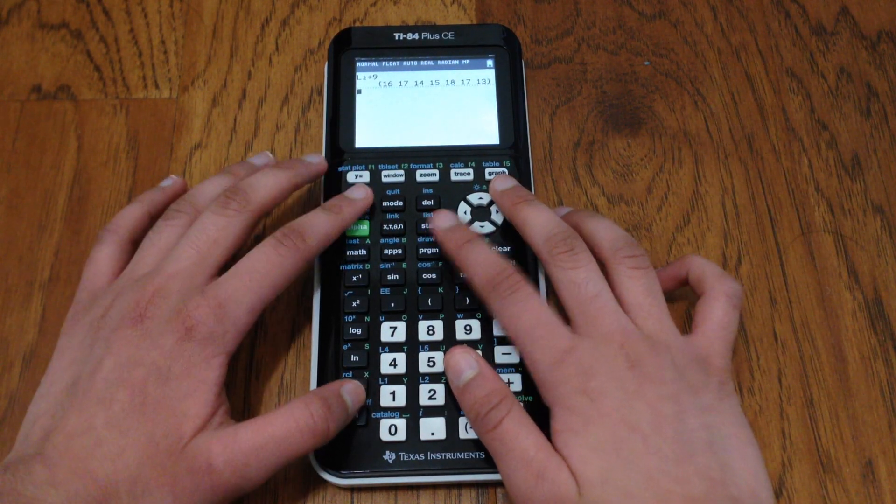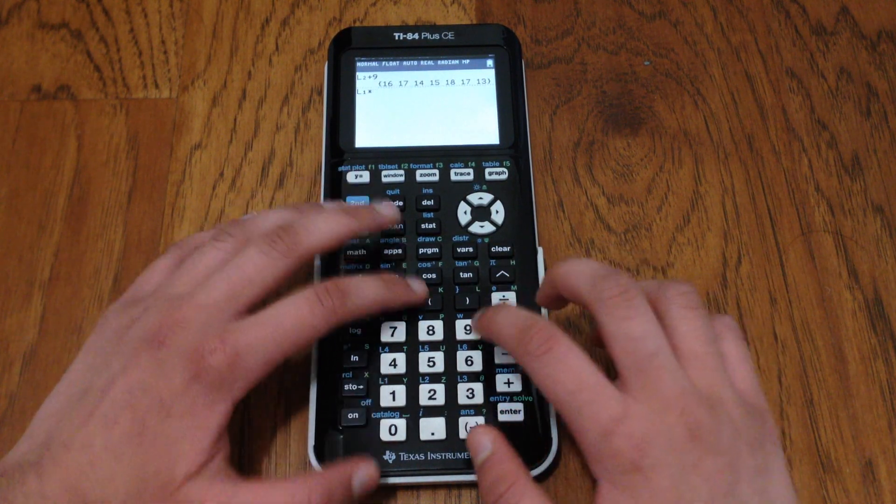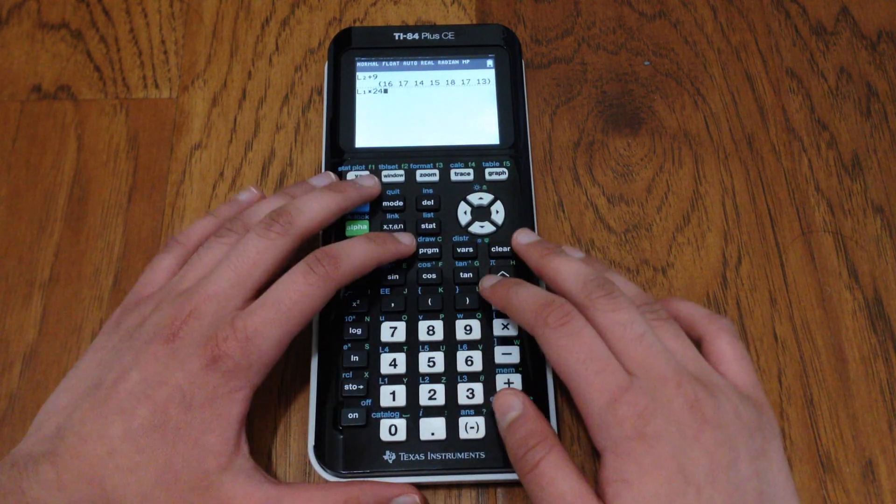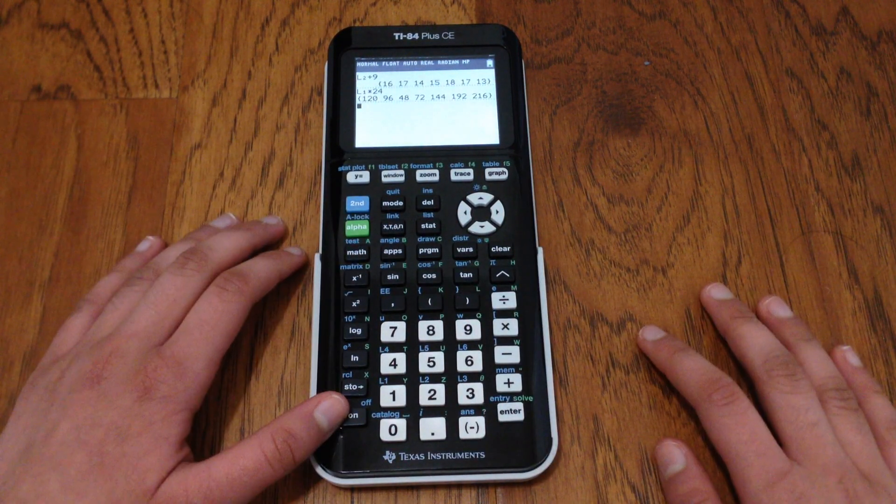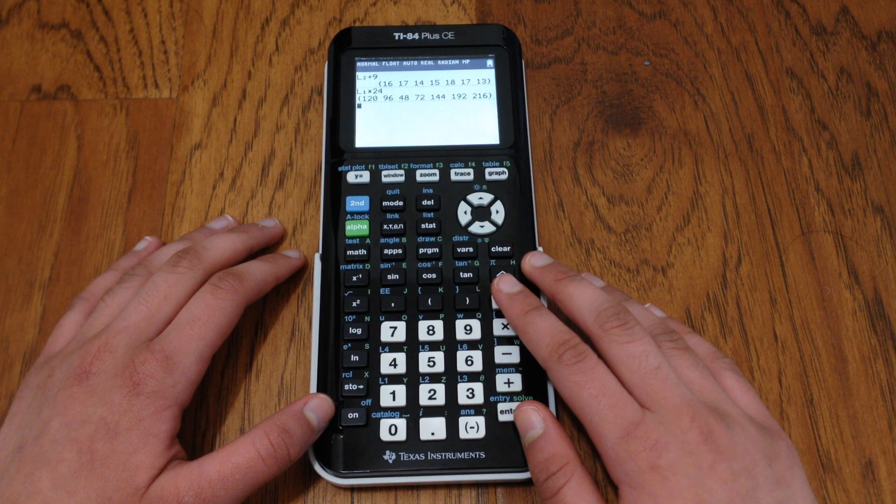Next, let's say you want to do list 1 and multiply it by 24, every value in there by 24. And as you can see, you can do that using this calculator trick.